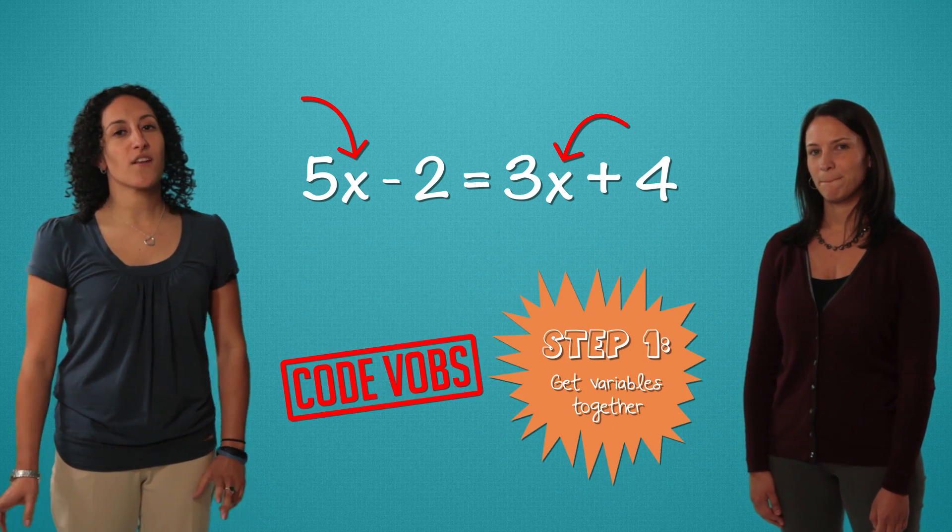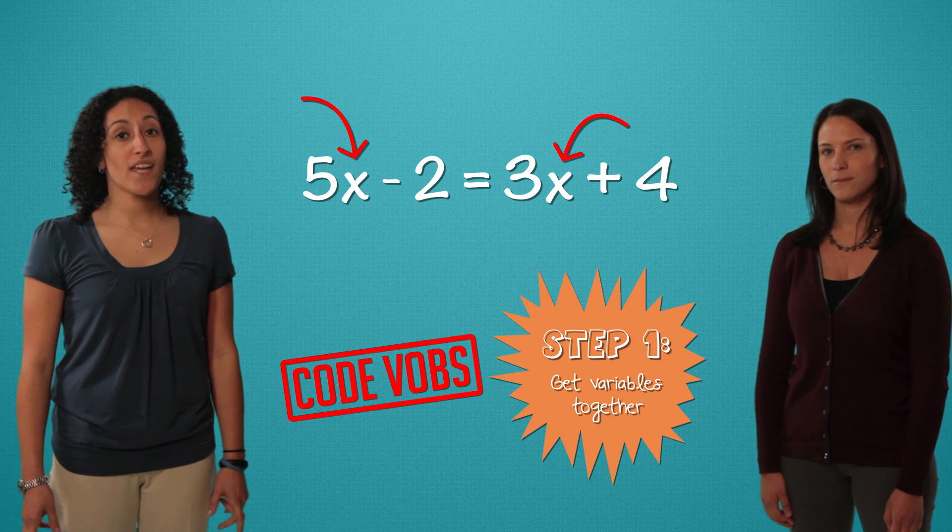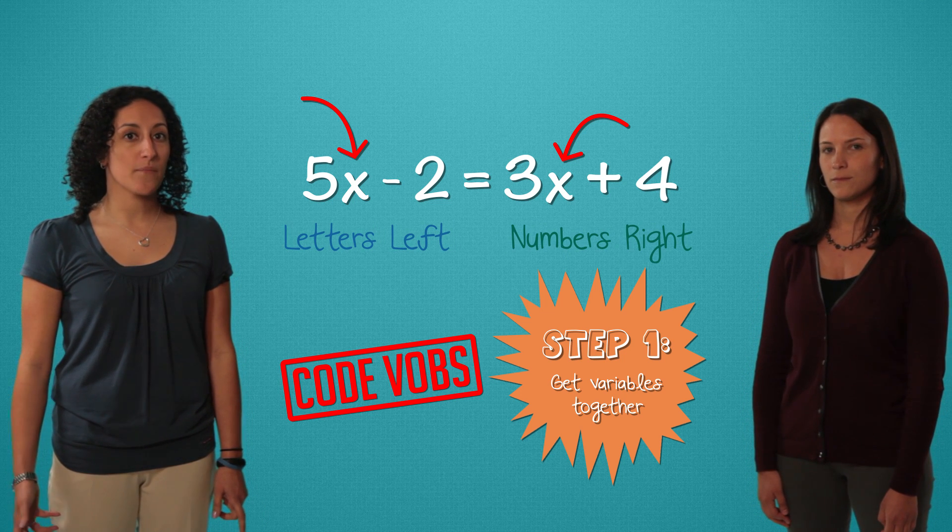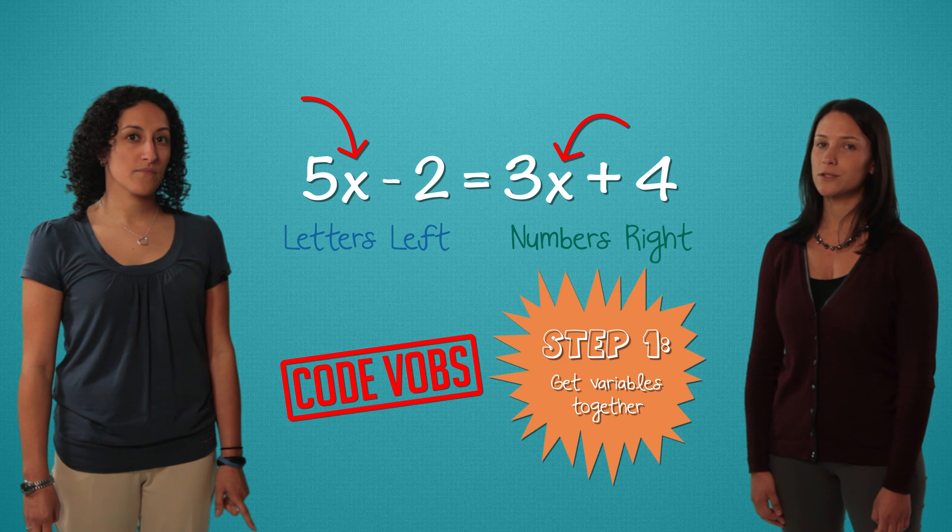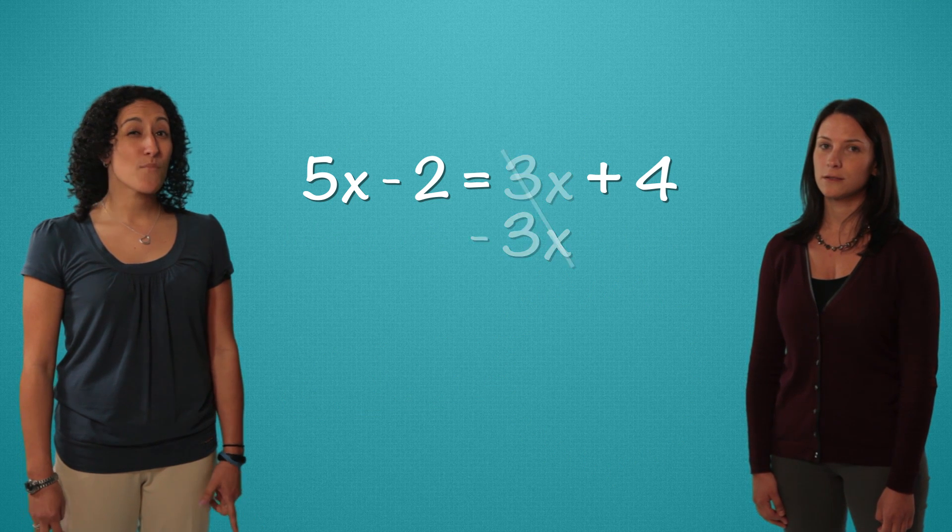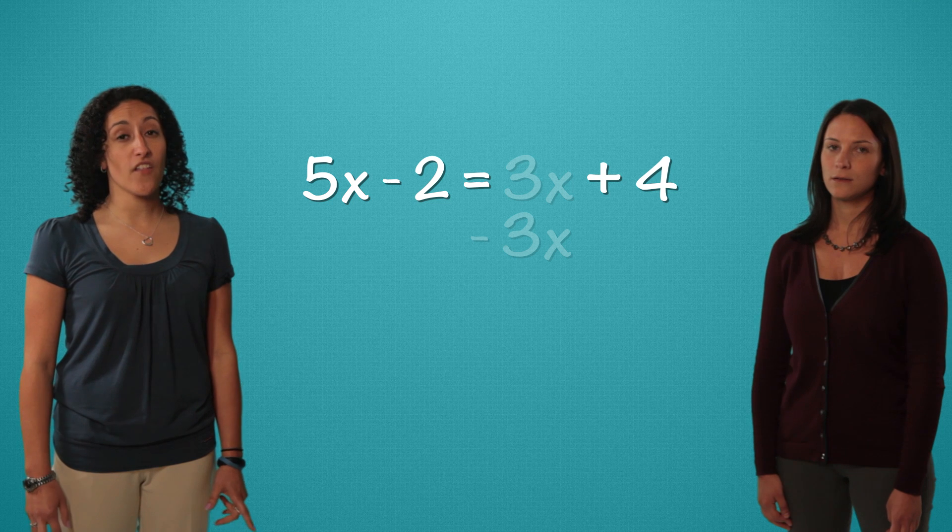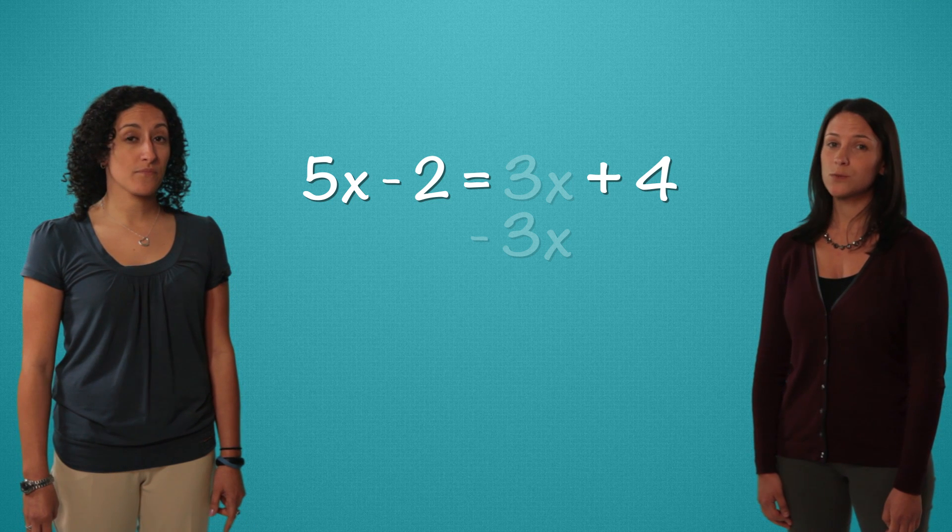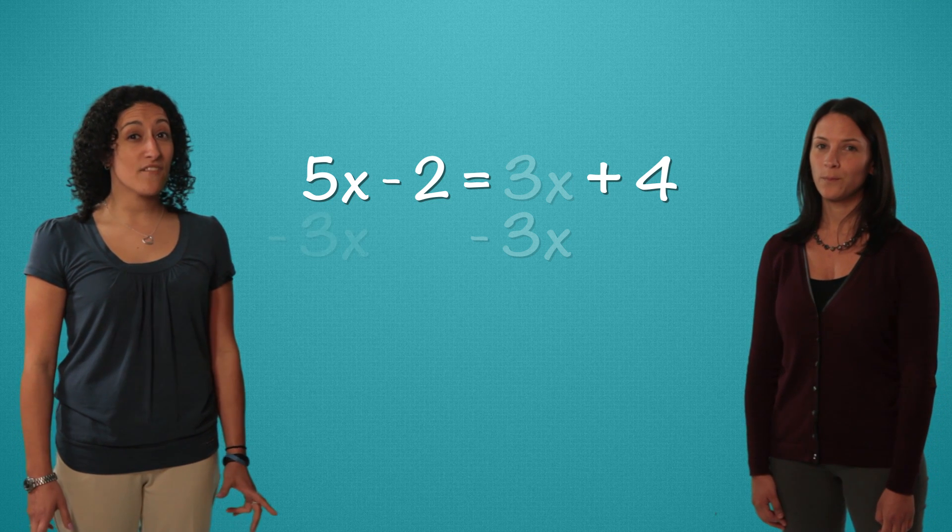The first thing we want to do is get all of our variables together. We get letters left, numbers right. Let's bring this 3x to the other side. To do that, we need to subtract 3x. But we also need to balance that on the other side of the equation. And we can't subtract 3x from 2, but we can from 5x.